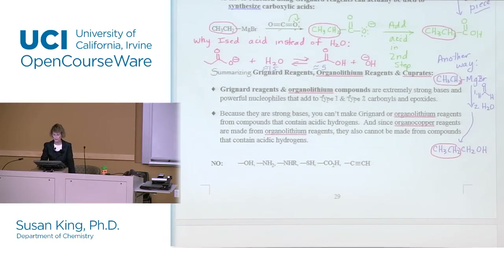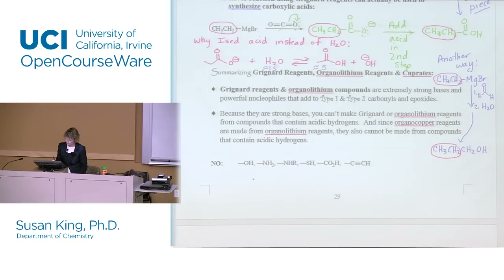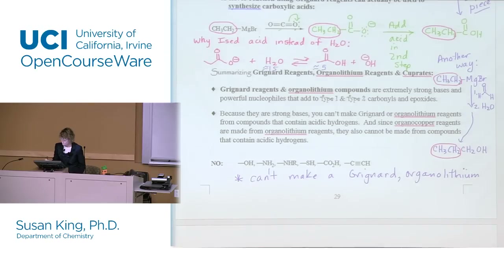Let's summarize: Grignard reagents, organolithium, and cuprates. Grignard reagents and organolithiums are extremely strong bases and powerful nucleophiles that add to all the types of carbonyls we talked about and to epoxides. Because they're strong bases, you can't make Grignard or organolithium reagents from compounds that contain acidic hydrogens. Since organocopper reagents or cuprates are made from organolithium, they also can't be made from things that contain acidic hydrogens.